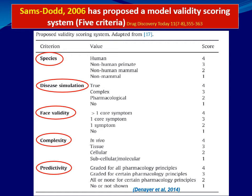These five criteria — species, disease simulation, face validity, complexity, and predictivity — are used to score and compare animal models, and can be applied to develop combinations of models that together maximize translational validity from animal to human.